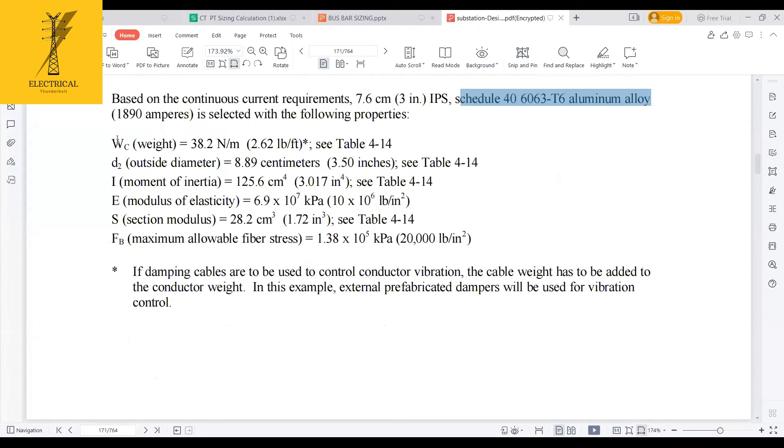I selected a three-inch C240 aluminum alloy type. And that pipe, the physical parameters: weight, outside diameter, moment of inertia, modulus of elasticity is this. This I got from the table, manufacture table or in this document also you are having this.